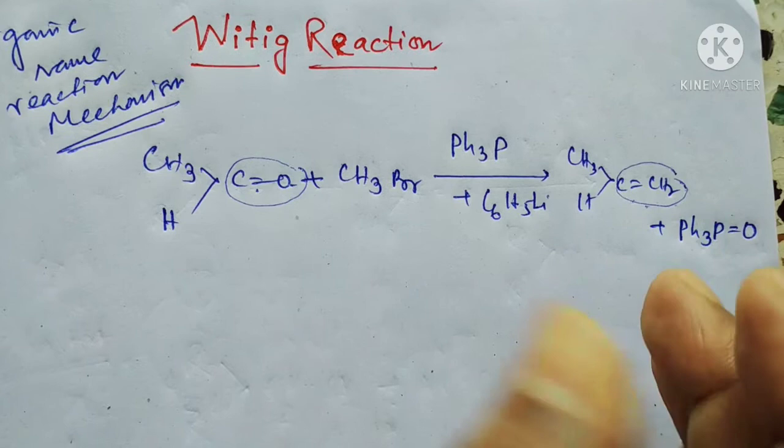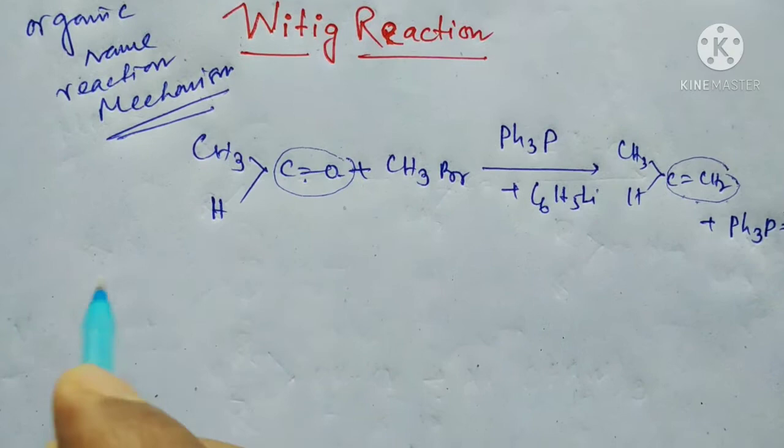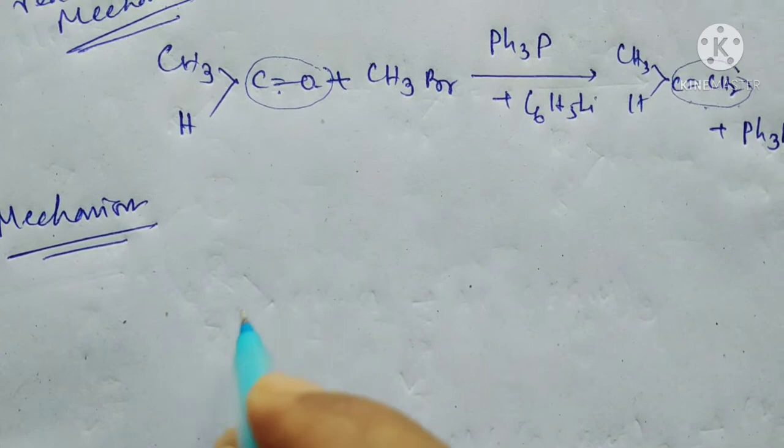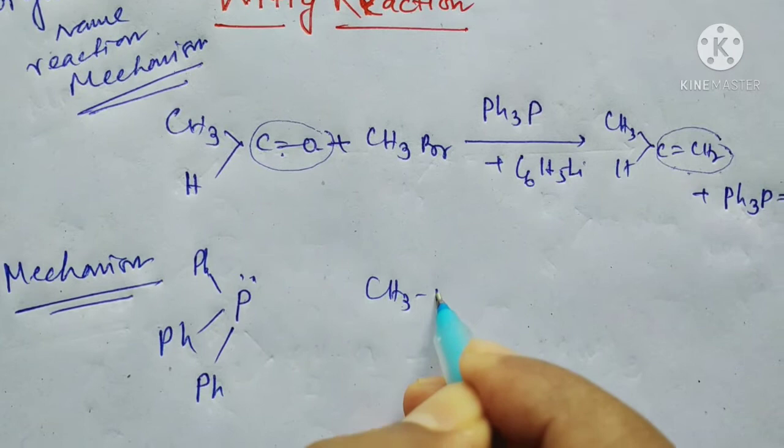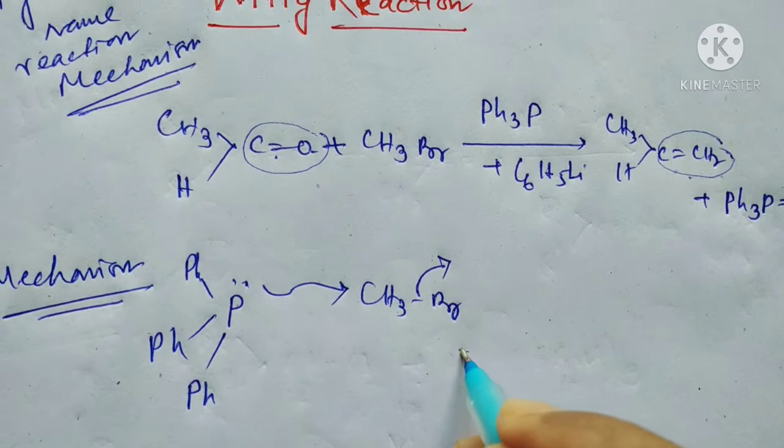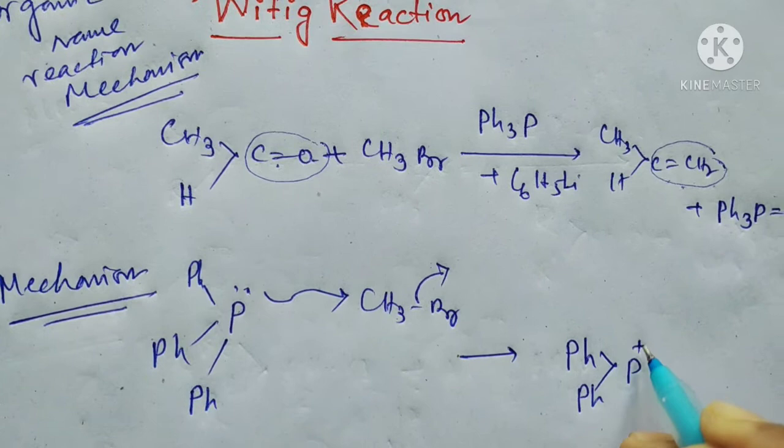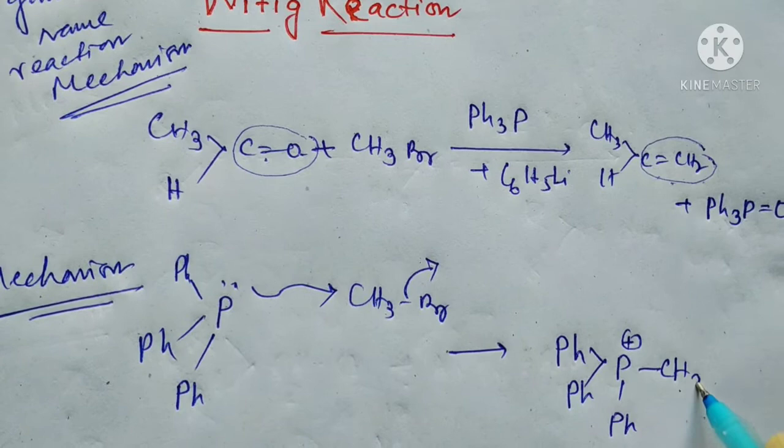Now I'll show you the mechanism. In the first part, triphenyl phosphine attacks CH3Br in a nucleophilic reaction, and bromine leaves the system to form this compound.